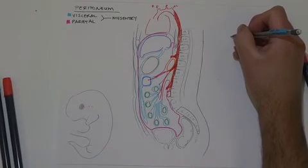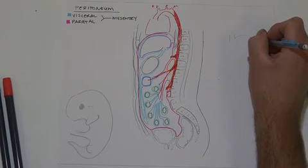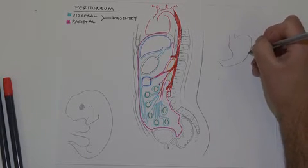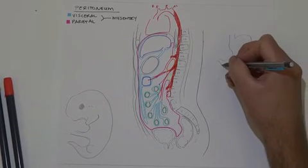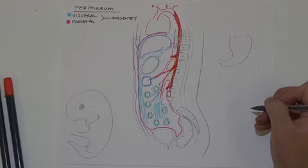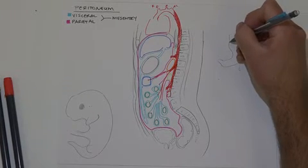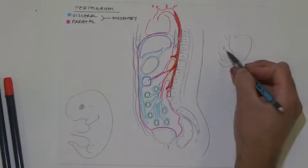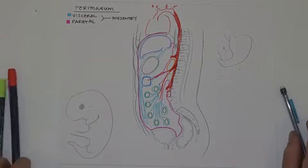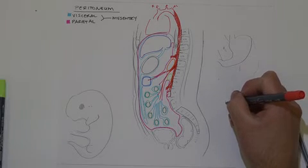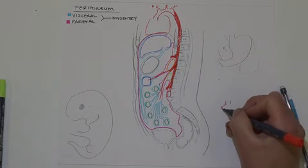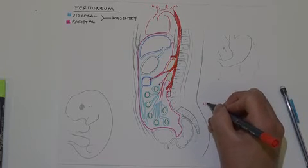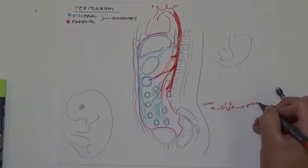Let's have a closer look at the arterial supply. The stomach is a J-shaped organ with a greater curvature and a lesser curvature. The greater omentum extends like a fatty apron from the greater curvature downward, and the lesser omentum extends upward from the lesser curvature to the liver. So we have two layers of omentum: the lesser extending upward and the greater extending downward. The celiac trunk comes off the abdominal aorta at T12 and supplies the liver, the spleen, and the stomach from its primary branches.